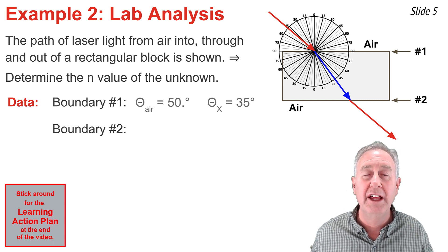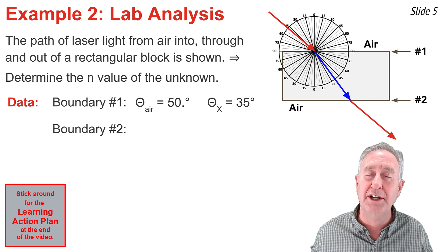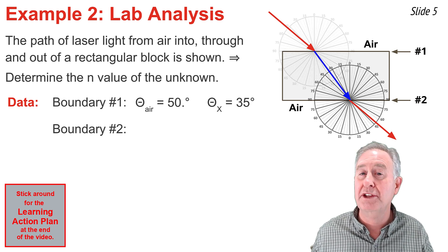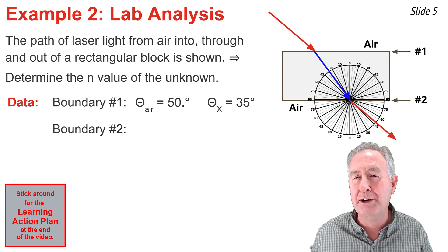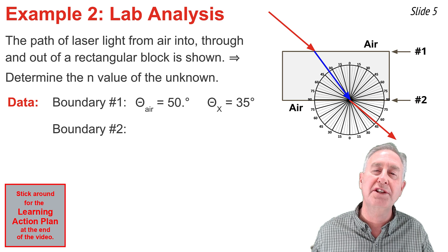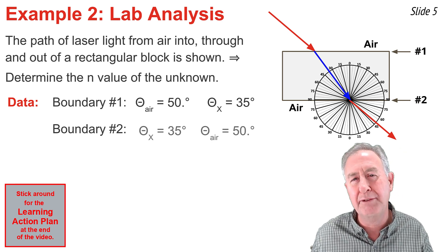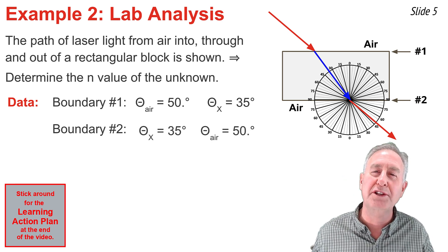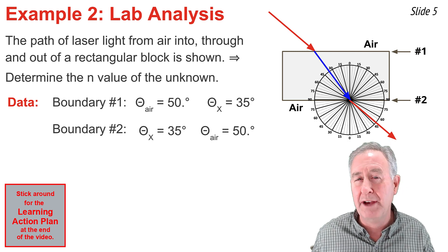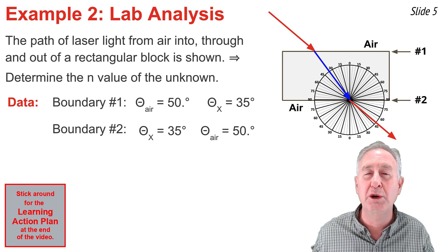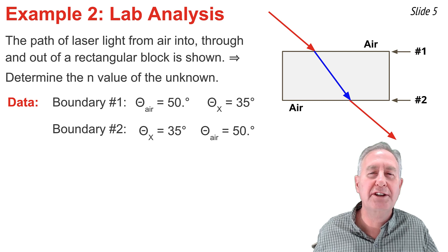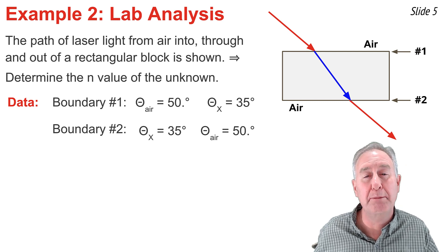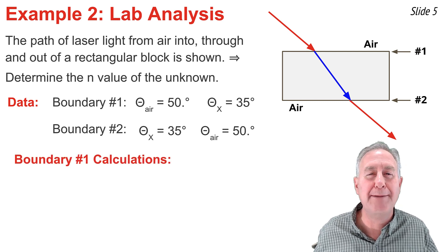At the top boundary where light bends as it enters the unknown material, I can place a protractor down and measure the angle of incidence in the air and the angle of refraction in the unknown material — I get approximately 50 degrees and 35 degrees. At the second boundary where the light exits, I measure the angle of incidence within the unknown material to be about 35 degrees and the angle of refraction to be 50 degrees. We get the same values for the angle in the air and in the unknown material, which is not surprising when opposite sides are parallel.